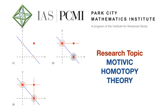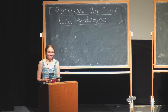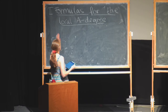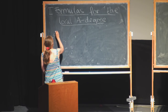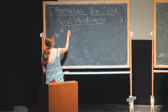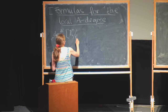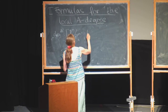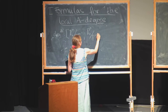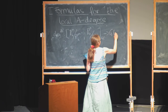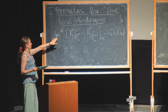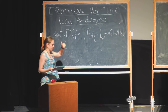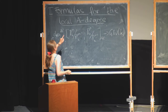Bright and early, ready to start the day with Sabrina Pauly's second workshop talk: Formulas for the Local A1 Degree. Good morning. Today I'm just talking about formulas. The A1 degree is assigned to a homotopy class of maps of the motivic N-sphere, an element of the Grothendieck-Witt ring of K. As I told you yesterday, if I have an element in here, this splits up as a sum of local A1 degrees, and I want to give you formulas for this today.